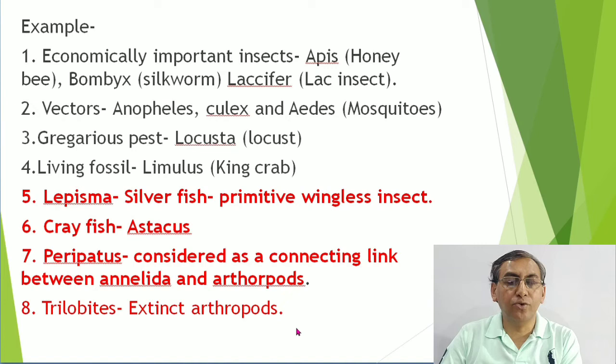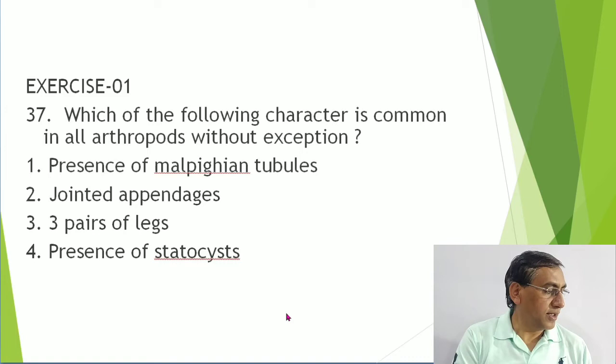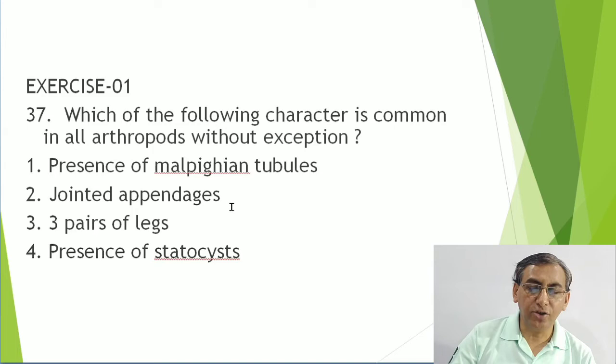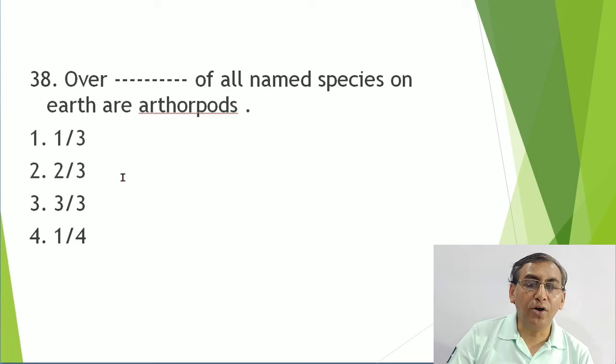Questions on Arthropoda: Which character is common to all arthropods without exception? The answer is jointed appendages and chitinous exoskeleton. Over two-thirds of all named species on Earth are arthropods - this is directly from NCERT.